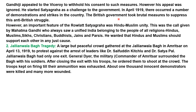The British government took brutal measures to suppress this anti-British struggle. However, an important feature of the Rowlatt Satyagraha was Hindu-Muslim unity. This was the call given by Mahatma Gandhi, who always saw a unified India belonging to people of all religions — Hindus, Muslims, Sikhs, Christians, Buddhists, Jains, and Parsis. He wanted Hindus and Muslims to support each other in such a just cause.